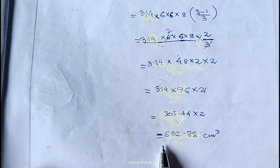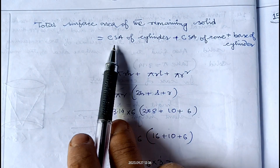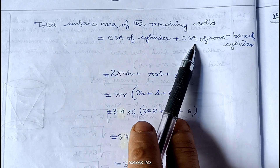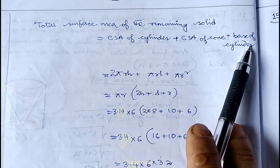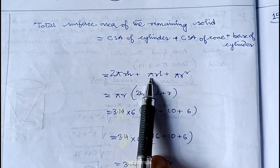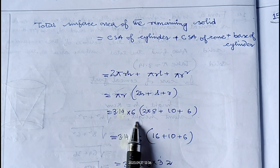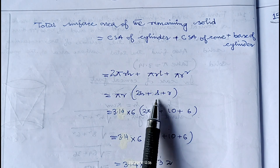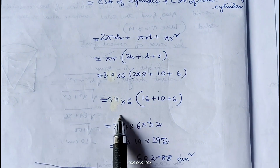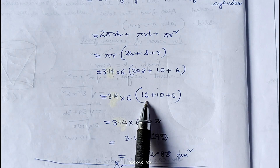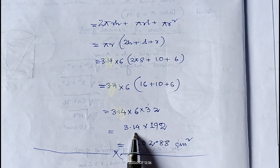Volume of remaining solid is 602.88 centimeter cube. For total surface area of remaining solid: curved surface of cylinder plus curved surface of cone plus base of cylinder equals 2 pi r h plus pi r l plus pi r squared. Taking pi r common gives pi r into (2h plus l plus r). So 3.14 into 6 into (16 plus 10 plus 6) equals 3.14 into 6 into 32 equals 3.14 into 192 equals 602.88 centimeter square.